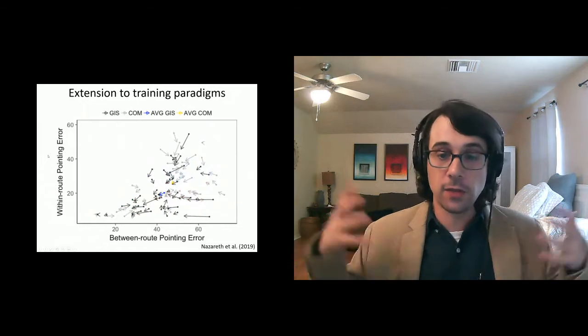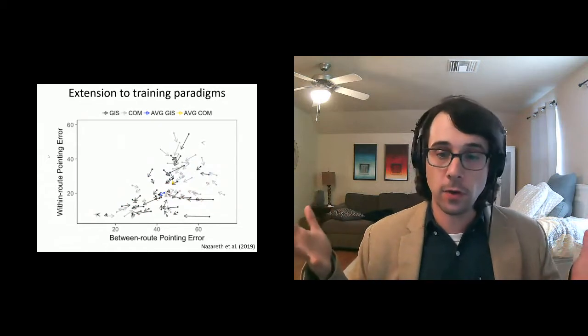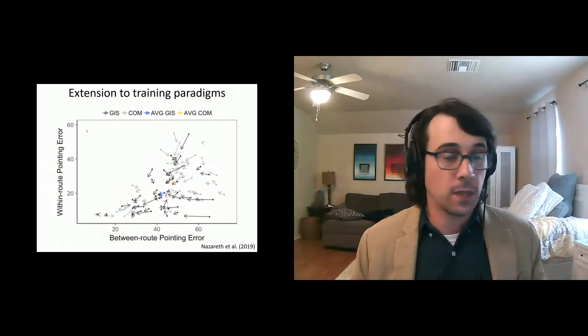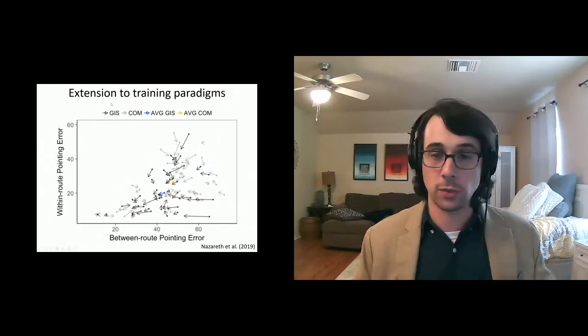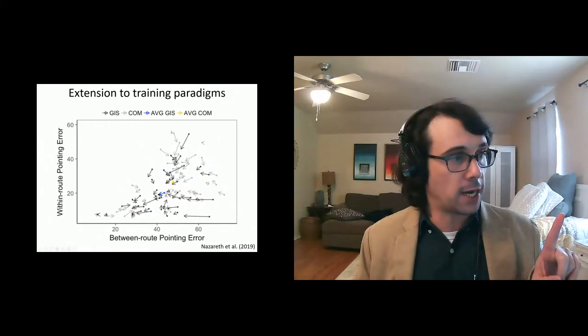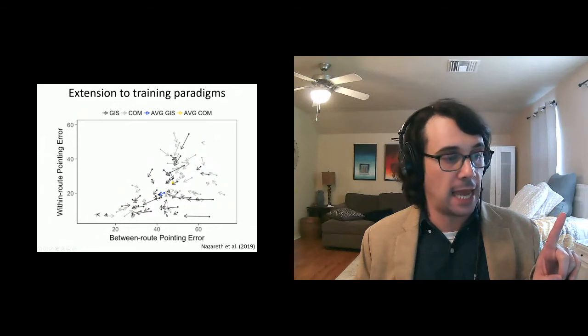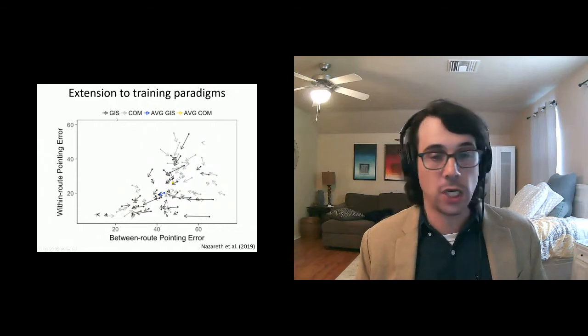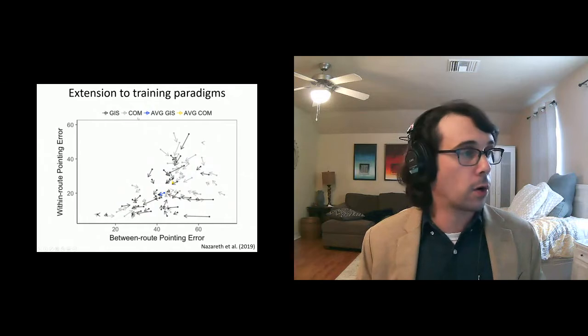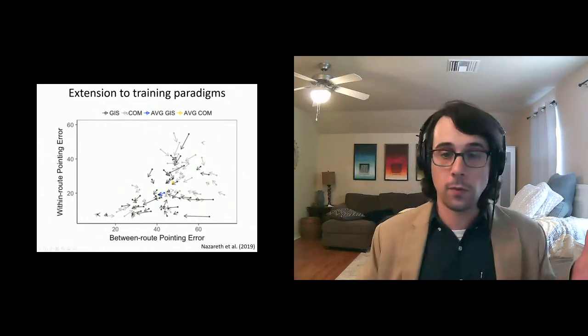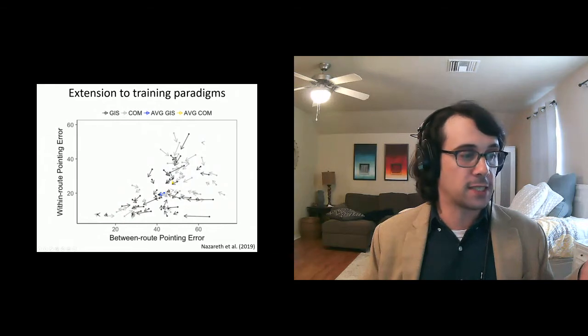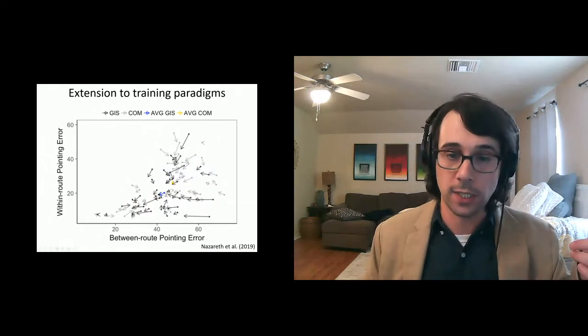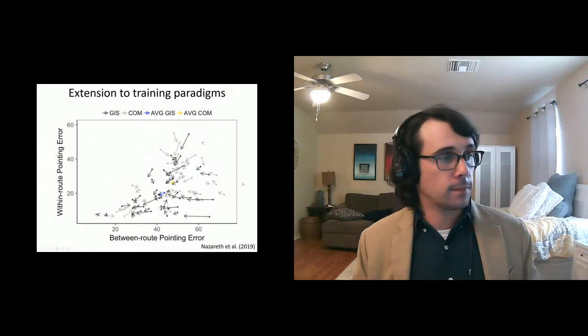Now, that baseline of individual variability allows us to go in further and ask questions like how navigational training might impact variability or who gets better. For example, in one experiment, we tested subjects on Virtual Silcton twice, once represented by the dot at the beginning of each arrow, and once represented by the dot at the end for their performance on each kind of task. And here, the students had either taken a semester of GIS classes, relevant to spatial learning, we would think, or communications classes. What we could show is that participants in the GIS class not only started off better compared to their communication colleagues, but they also improved to a greater extent.